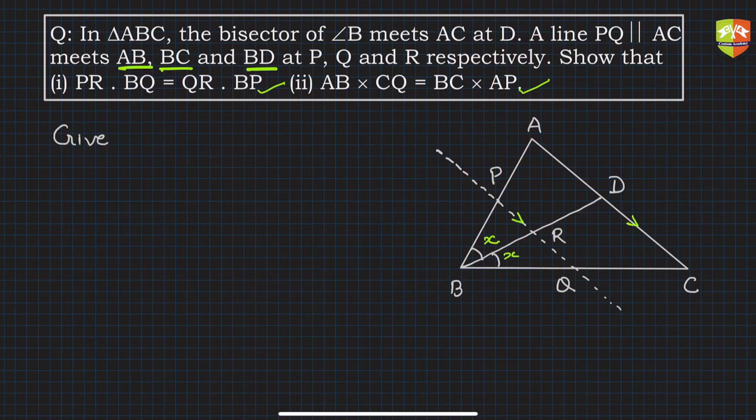Given: BD bisects angle B, and PQ is parallel to AC. To prove part (i): PR × BQ = QR × BP.